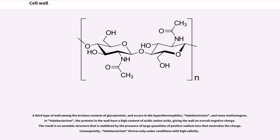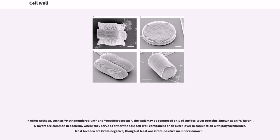A third type of wall among the archaea consists of glycoprotein, and occurs in the hyperthermophiles, Halobacterium, and some methanogens. In Halobacterium, the proteins in the wall have a high content of acidic amino acids, giving the wall an overall negative charge. The result is an unstable structure that is stabilized by the presence of large quantities of positive sodium ions that neutralize the charge. Consequently, Halobacterium thrives only under conditions with high salinity. In other archaea, such as Methanomicrobium and Desulfurococcus, the wall may be composed only of surface layer proteins, known as an S-layer. S-layers are common in bacteria, where they serve as either the sole cell wall component or an outer layer in conjunction with polysaccharides. Most archaea are gram-negative, though at least one gram-positive member is known.